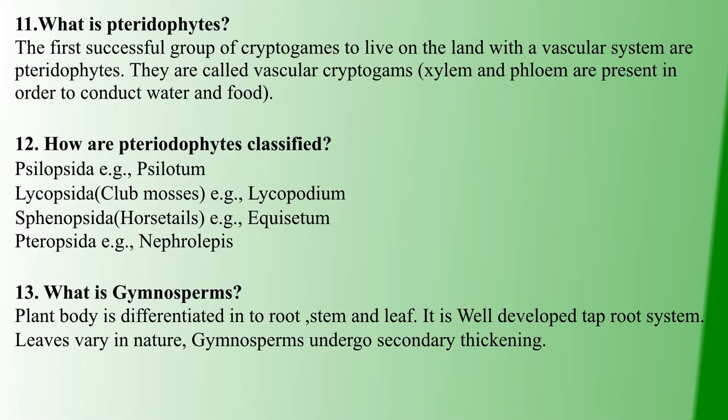Next, what is gymnosperms? Gymnosperms are plants with a developed root, stem, and leaf. Gymnosperms have secondary thickening and are advanced. We have developed elements in the gymnosperms plants.